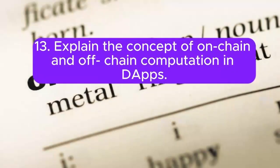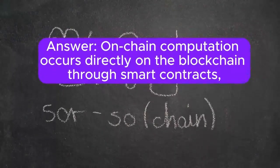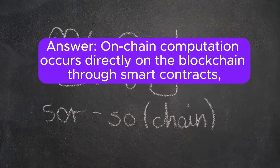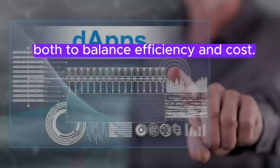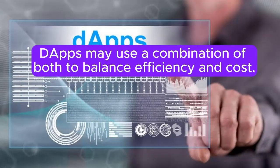13. Explain the concept of on-chain and off-chain computation in DApps. Answer: On-chain computation occurs directly on the blockchain through smart contracts, while off-chain computation happens outside the blockchain. DApps may use a combination of both to balance efficiency and cost.